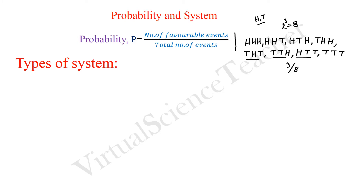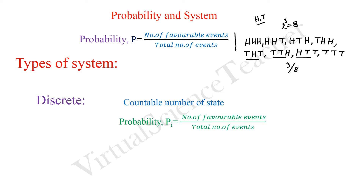There are basically two types of systems. One is the discrete type, in which the total number of states can be counted. The other is the continuous system. For a discrete system, the probability can be found by the above-mentioned method: probability of a countable state equals the number of favorable outcomes divided by the total number of events.